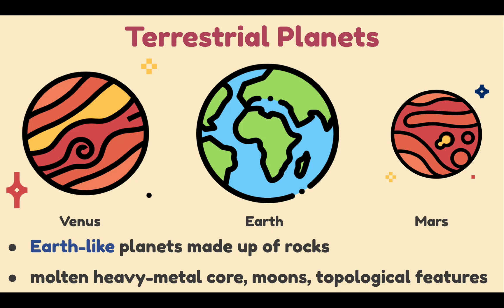Venus is considered to be Earth's twin planet because it has a very similar size and mass with Earth. Mars, on the other hand, is about half the Earth's size.